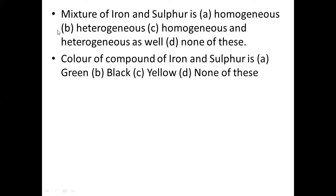Color of compound of iron and sulphur is — option green, second option black, third yellow, fourth none of these. Parnit, roll number 19. Color of compound of iron and sulphur is black.